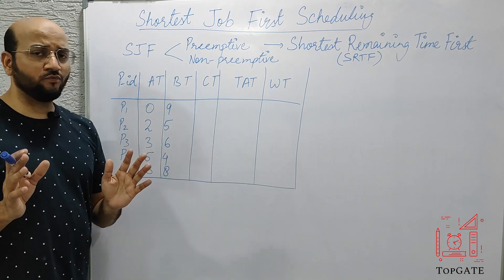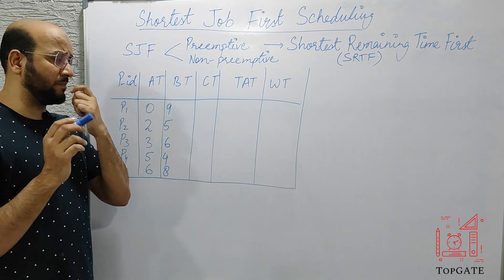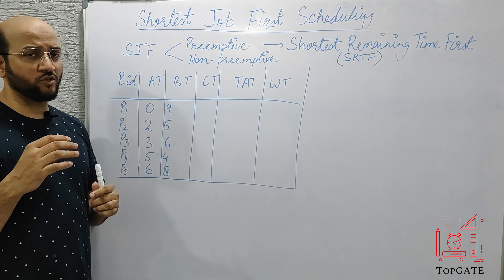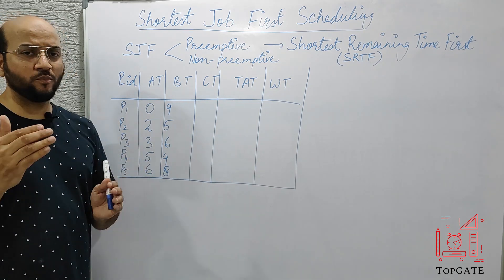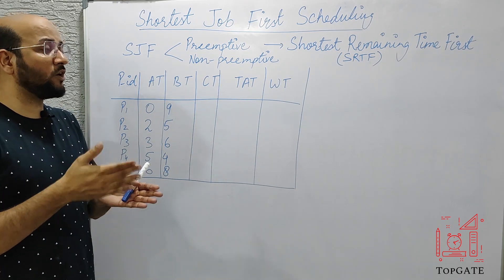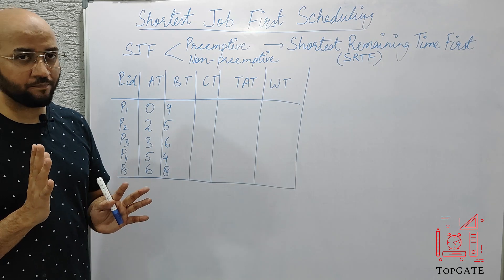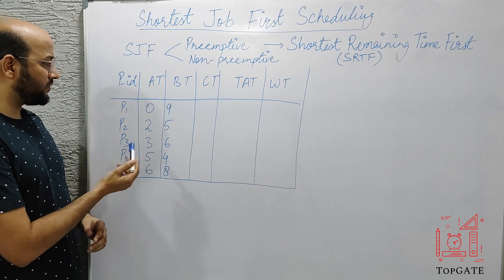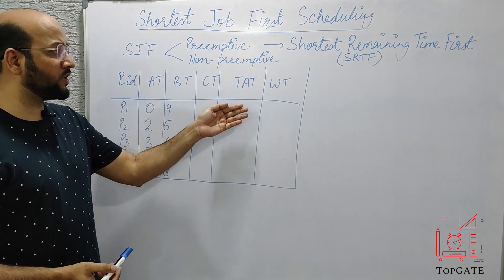We will follow the same approach as the previous video, but with a slight difference — we will use the preemptive approach. We will start with any process, and any time a process comes in with a shorter burst time than the ongoing process, the ongoing process has to leave the CPU and go to the waiting state. We have five processes P1 to P5 with given arrival times and burst times, and we need to calculate turnaround time and waiting time.